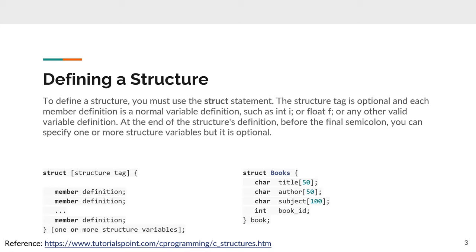The structure tag can be regarded as an alias of the current structure, like the name of the structure. But it is optional, which means if you only use the structure one time, you do not need to give it a name. You could neglect the structure tag by just defining one or more structure variables. Here is a detailed example of a defined structure.